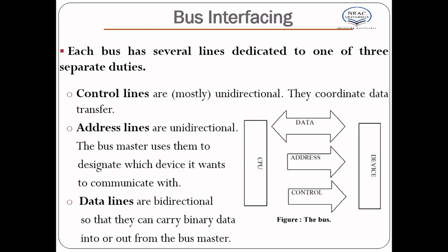Each bus has several lines dedicated to one of three separate duties. There are control lines, address lines, and data lines. Control lines are mostly unidirectional. They carry out control commands to coordinate and control all activities within the bus master.